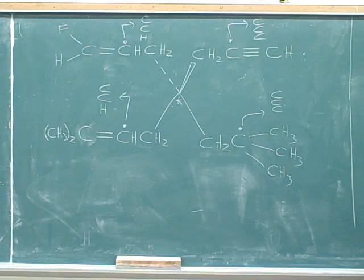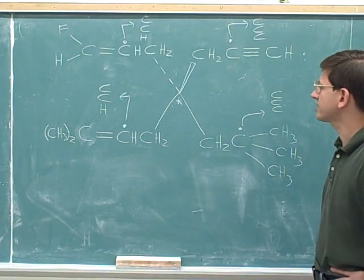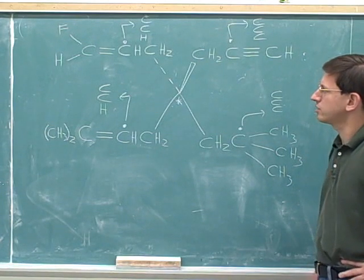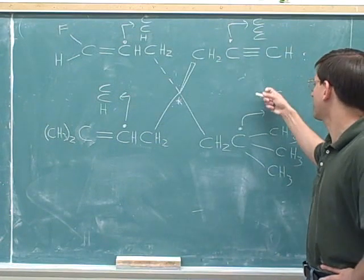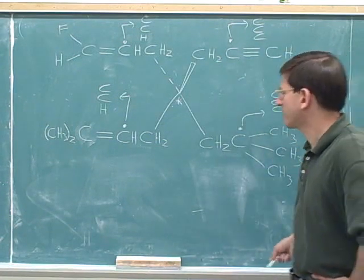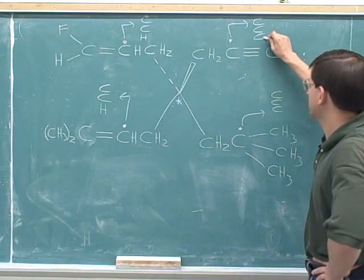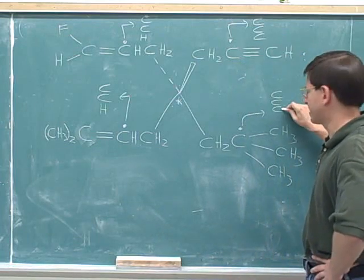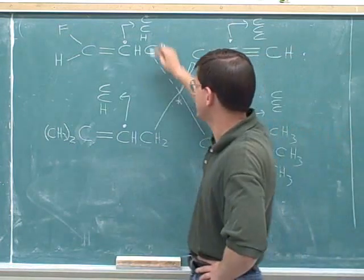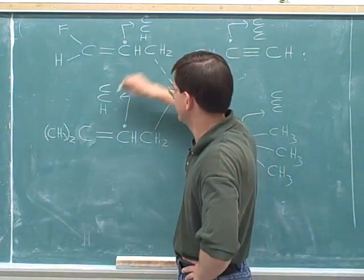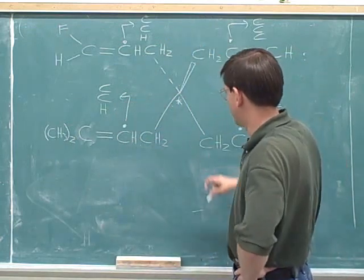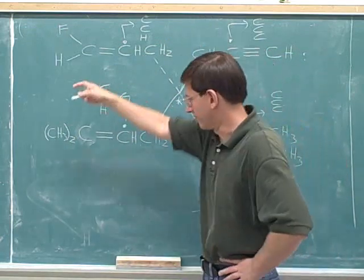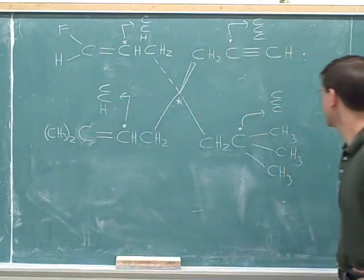Now we can start to break some of the ties. The two groups on the right are going to beat the two groups on the left. On the right we have carbon, carbon, carbon and carbon, carbon, carbon — so the third atom in each of those lists is a carbon. That beats the third atom in the left-side lists, which is a hydrogen. So on the right we'll have the number one and two priorities, and on the left we'll have the three and four priorities.